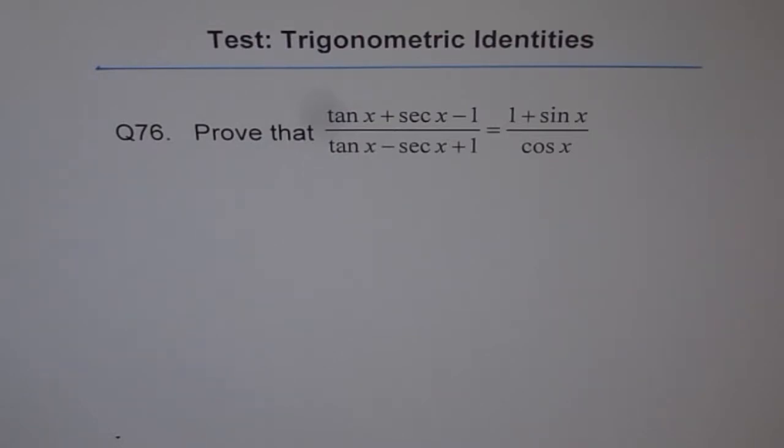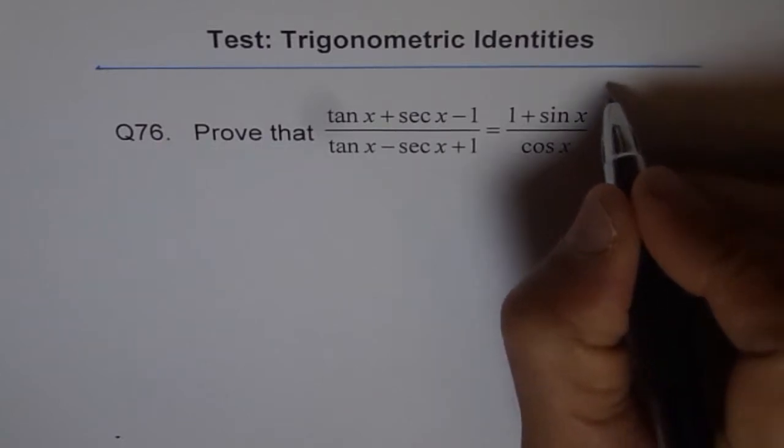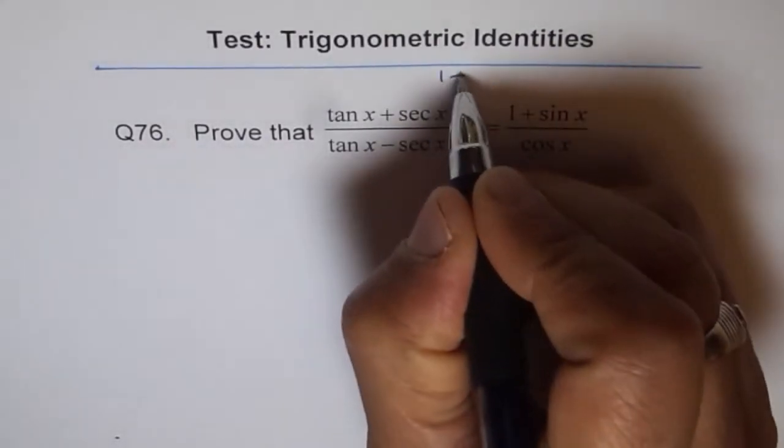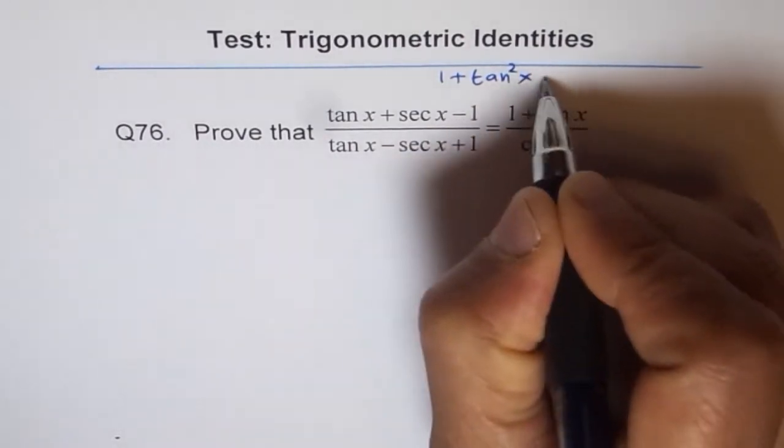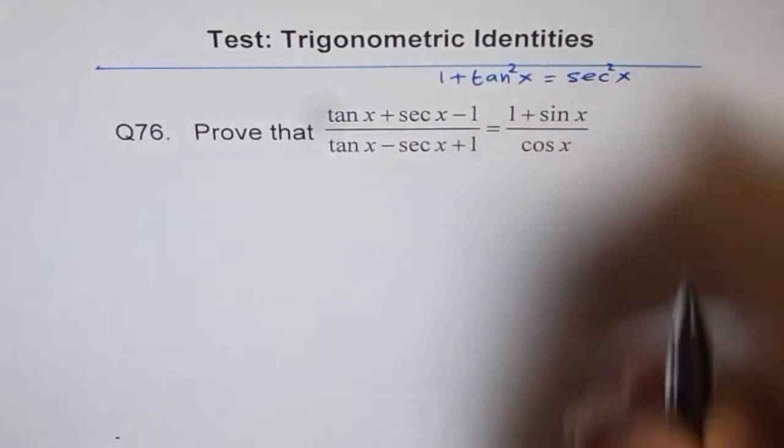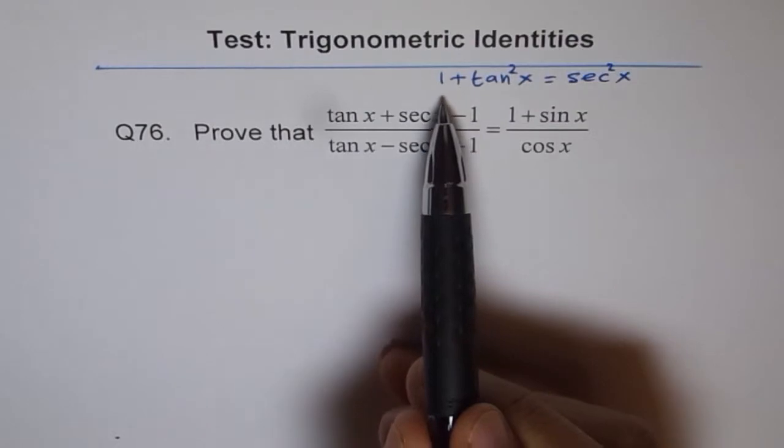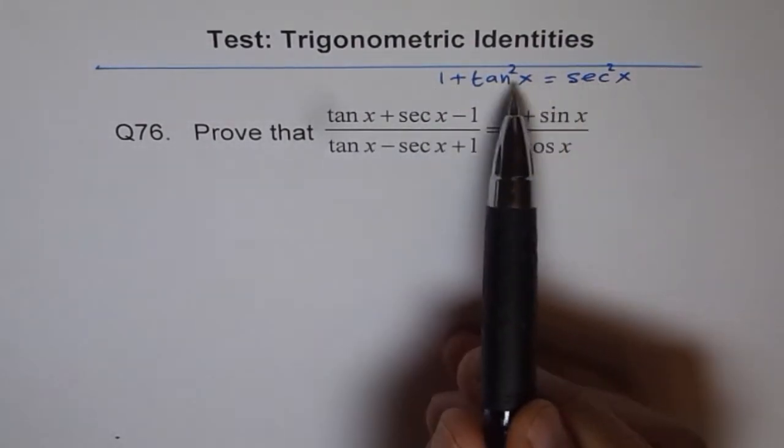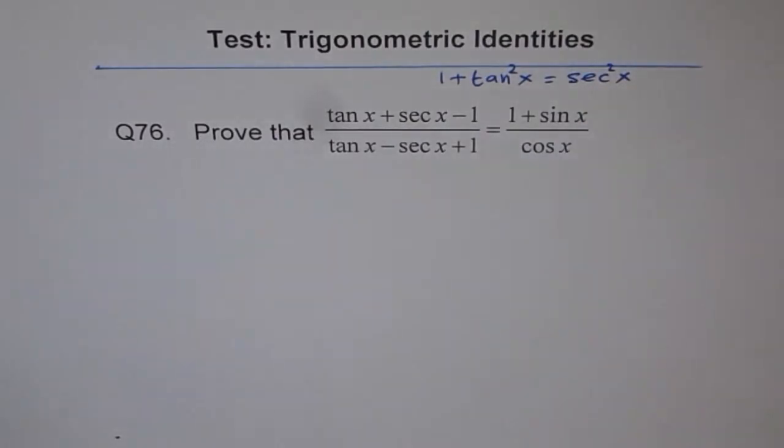We did a similar one with sin x plus cos x minus 1. Follow the same strategy here. I will make use of the trigonometric Pythagorean identity which relates tan and sec, which is 1 + tan²x = sec²x. From here, I can always write 1 as sec²x - tan²x. So I'll use this Pythagorean identity to solve this equation.